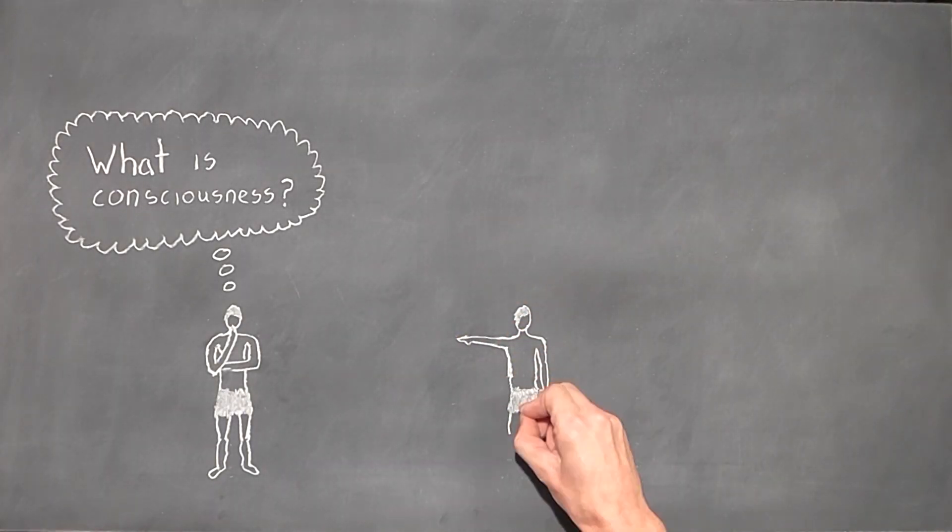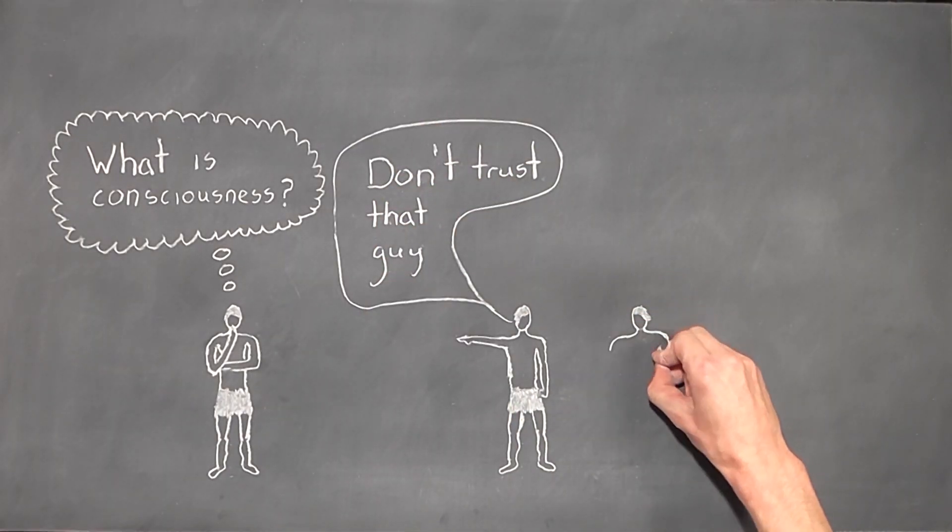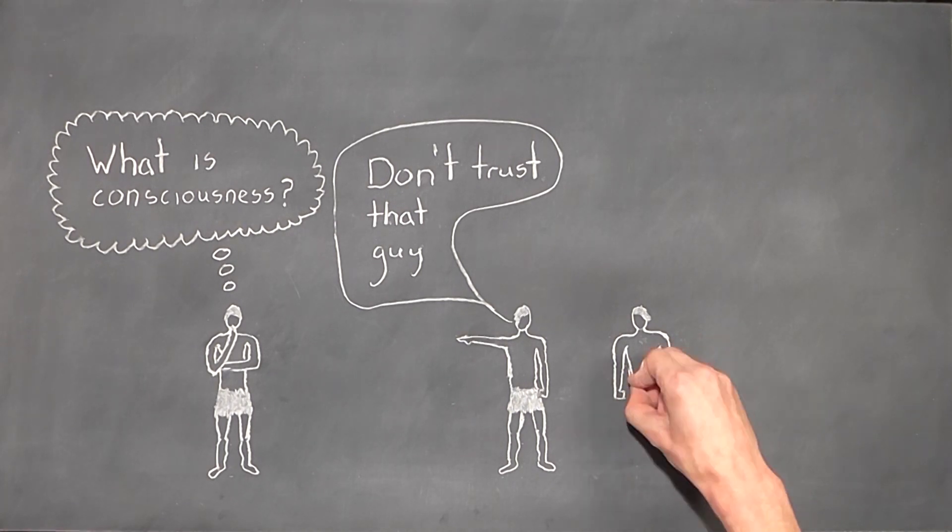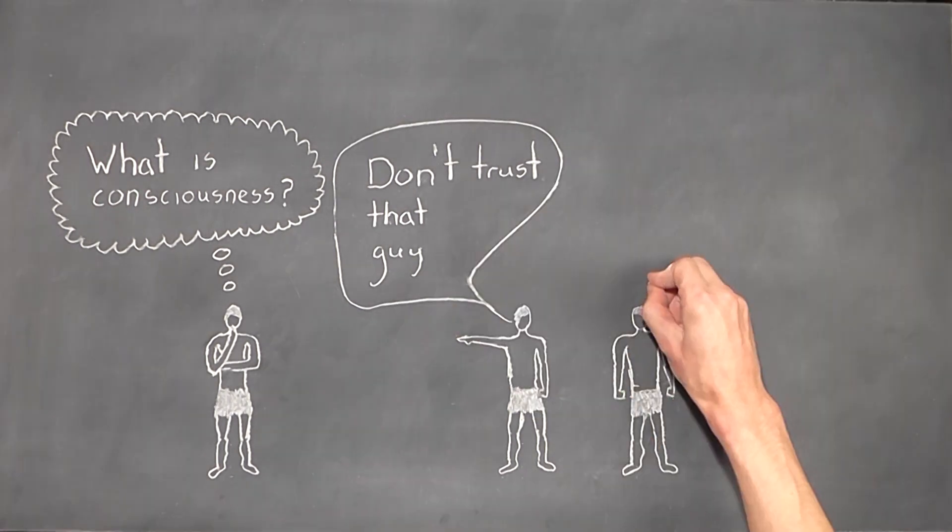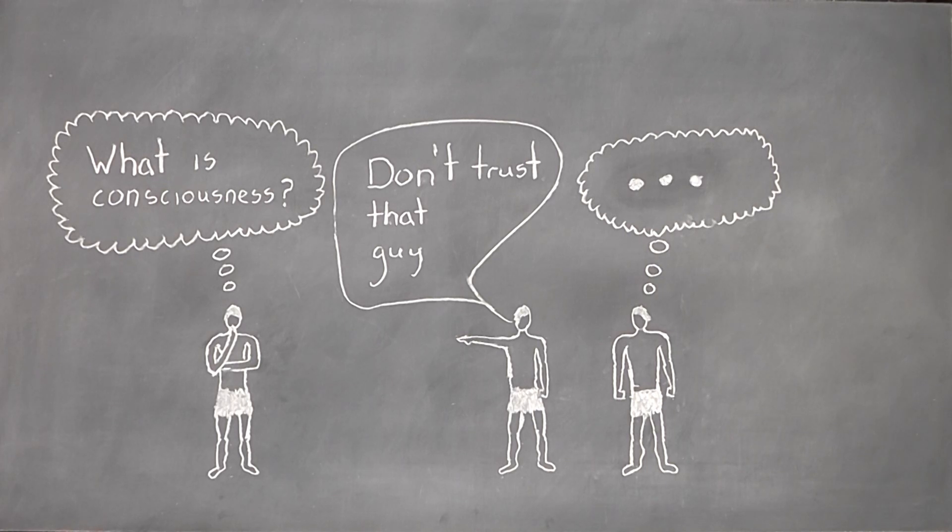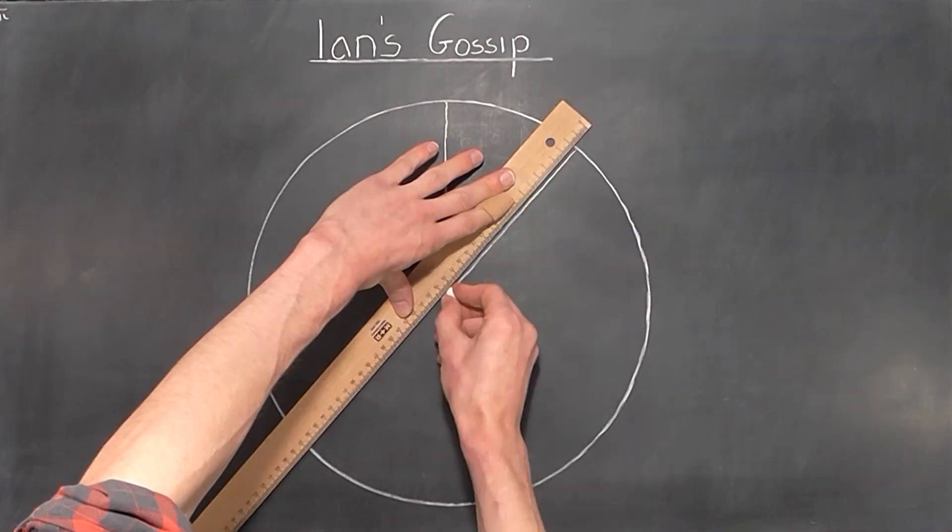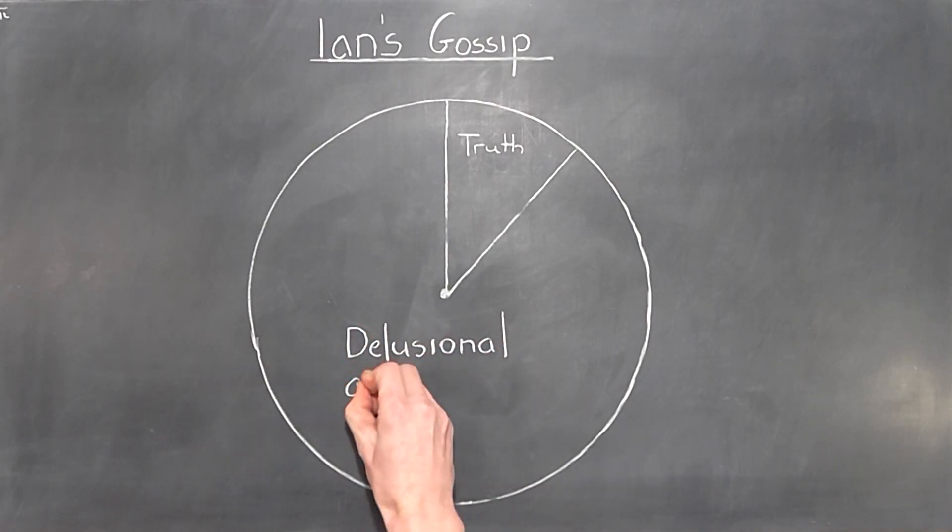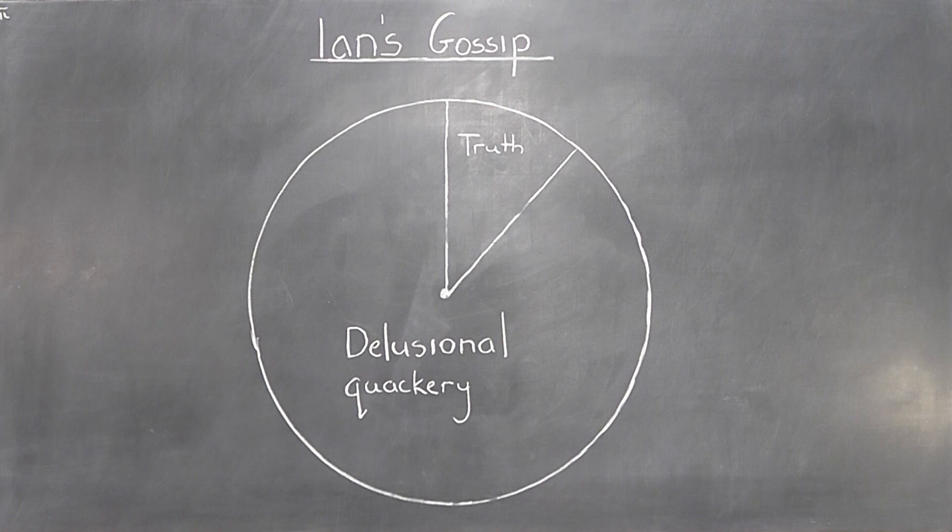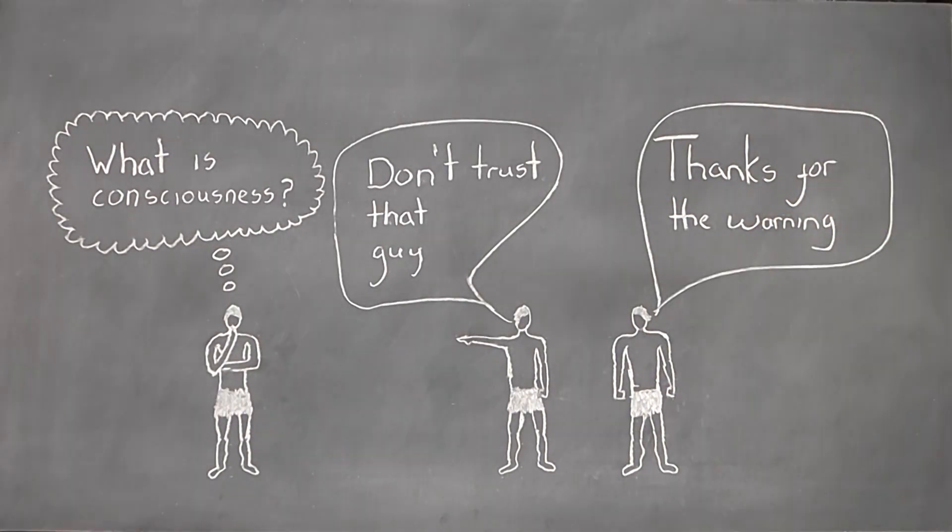But also gossip. Suppose Ian warns Peter against the character of Stan, accusing him of being a serial killer. From the evolutionary perspective of surviving and reproducing, what's Peter's best course of action? Is it to make friends with Stan to gather evidence for himself? Even if we assume that Ian's gossip is true only 10% of the time, why should Peter take this unnecessary risk and possibly end up dead, when it costs him next to nothing to take Ian's word as true and exclude Stan from the tribe?